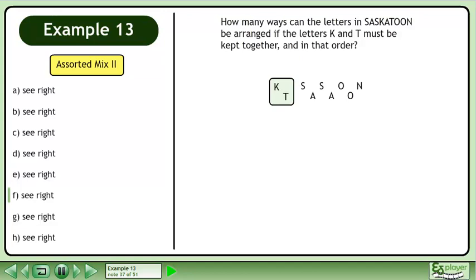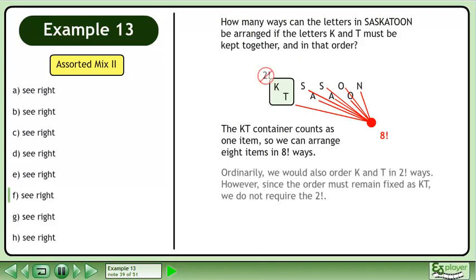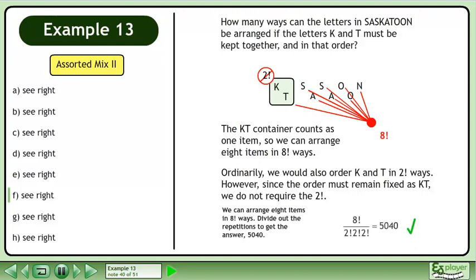Pause the video and organize the information about this question. Put K and T in a container since they must stay together. The KT container counts as one item, so we can arrange eight items in eight factorial ways. Ordinarily, we would also order K and T in two factorial ways. However, since the order must remain fixed as KT, we do not require the two factorial. We can arrange eight items in eight factorial ways. Divide out the repetitions to get the answer, 5040.